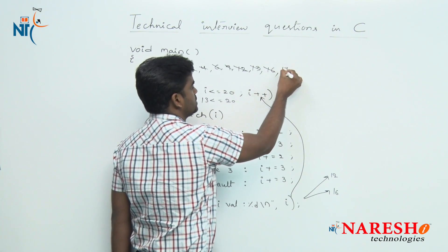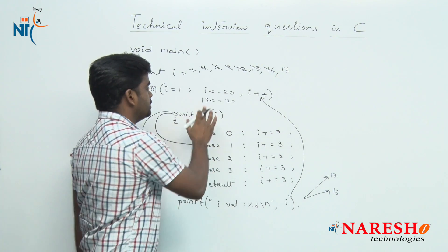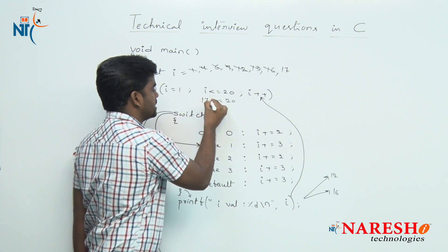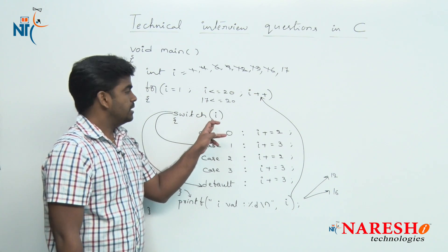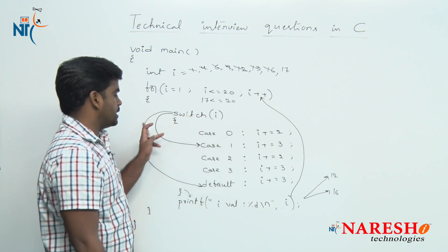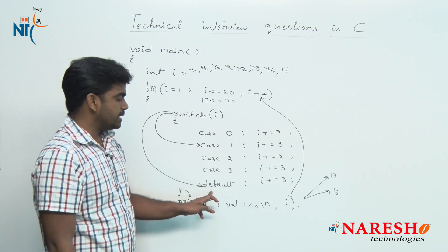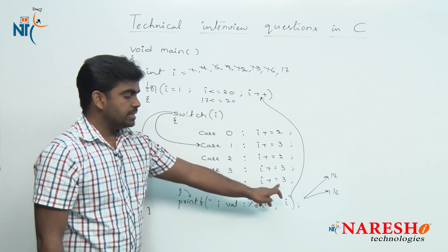It will check the condition: 17 is less than or equals to 20, condition true. Control moves inside switch of 17, there is no such case 17. Default case executes. 17 plus 3 is 20.